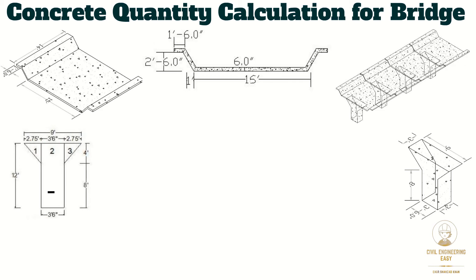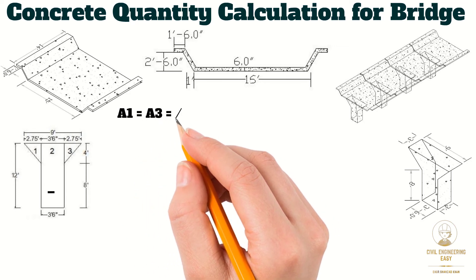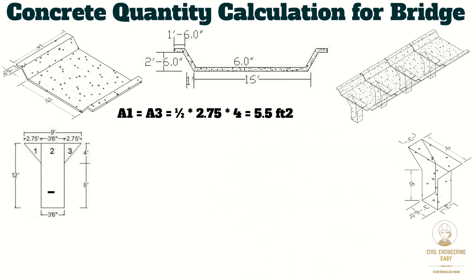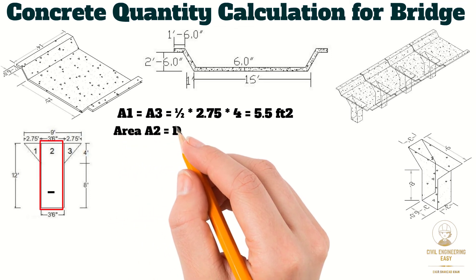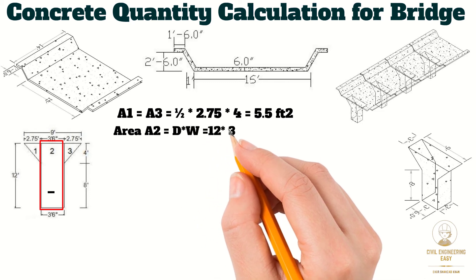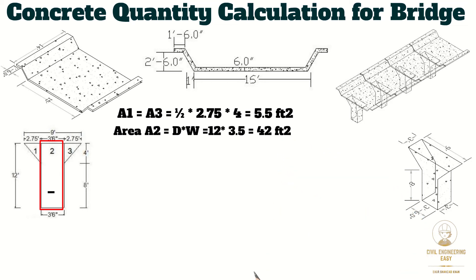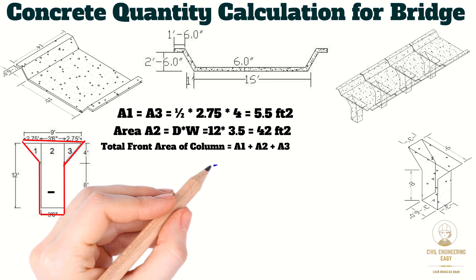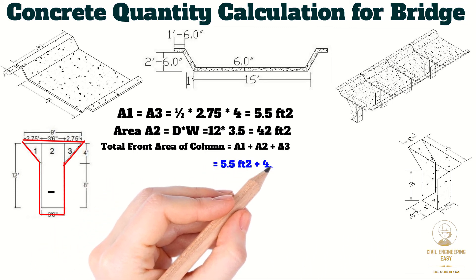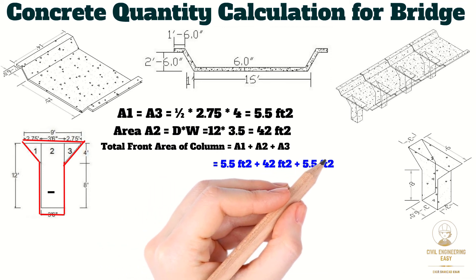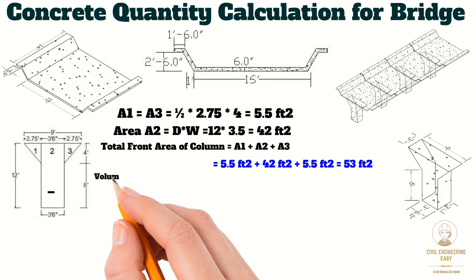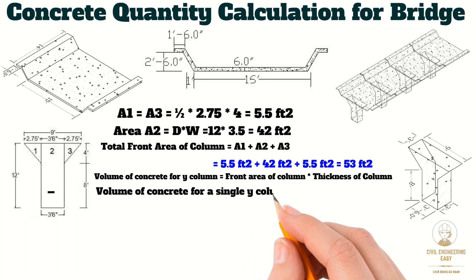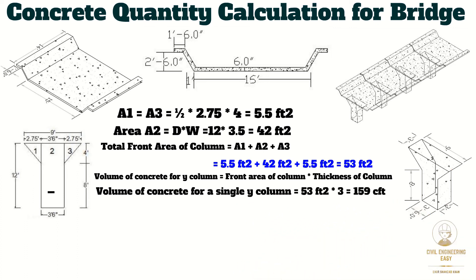Areas 1 and 3 are triangular in shape. Their area equals half times base times height: base is 2.75 feet multiplied by depth of 4 feet, giving 5.5 square feet each. Area 2 equals the depth of the column multiplied by the width: 12 feet by 3.5 feet equals 42 square feet. The total front area of the column equals A1 + A2 + A3 = 5.5 + 42 + 5.5 = 53 square feet. The volume of concrete for the Y column equals the front area of 53 square feet multiplied by the thickness of 3 feet.